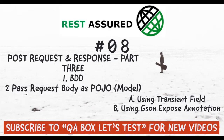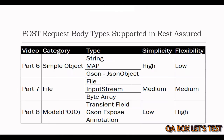This video is a continuation of sending HTTP POST requests in REST Assured. We will focus on creating a model or POJO class and supplying the request payload using it. POJO stands for Plain Old Java Object and is used for increasing the readability and reusability of a program.